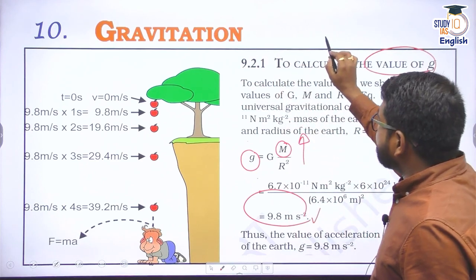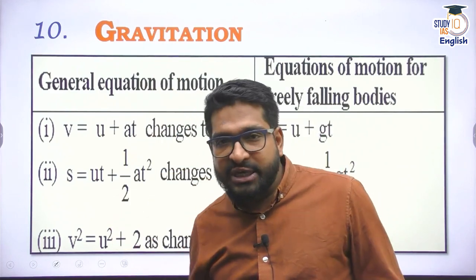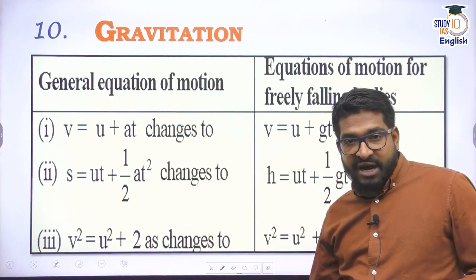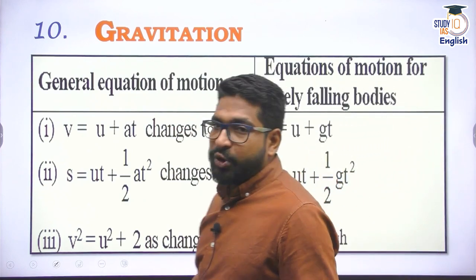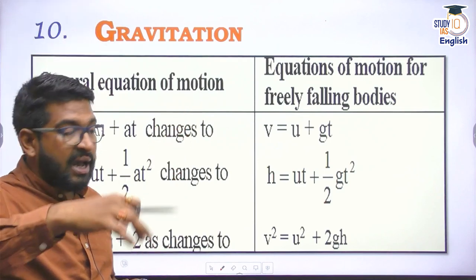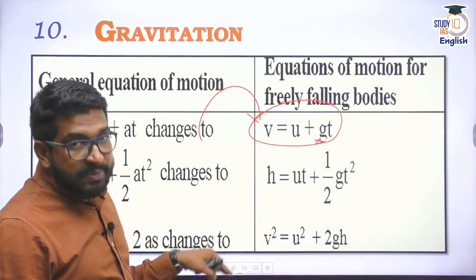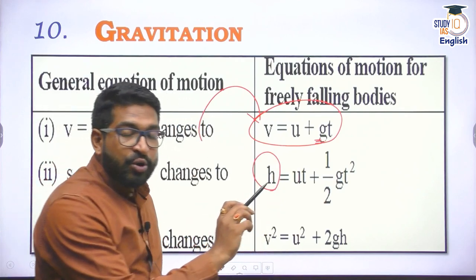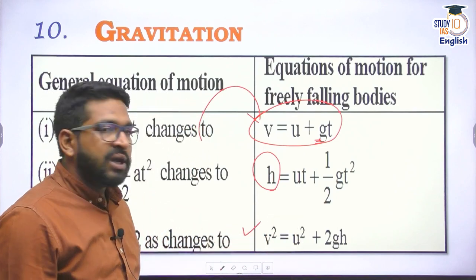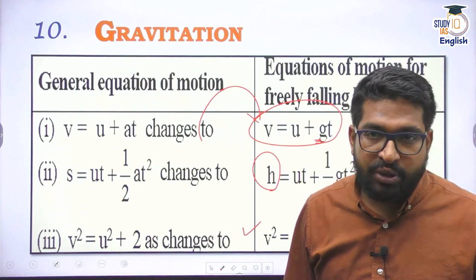This concept of g has led us to understanding the laws of motion for a falling body. We have established the equations of motion: v = u + at, v² = u² + 2as, s = ut + ½at². These change for a falling body — wherever we have 'a' we get acceleration due to gravity g, and wherever we have 's' (distance) it becomes height h. So: v = u + gt, h = ut + ½gt², and v² = u² + 2gh.